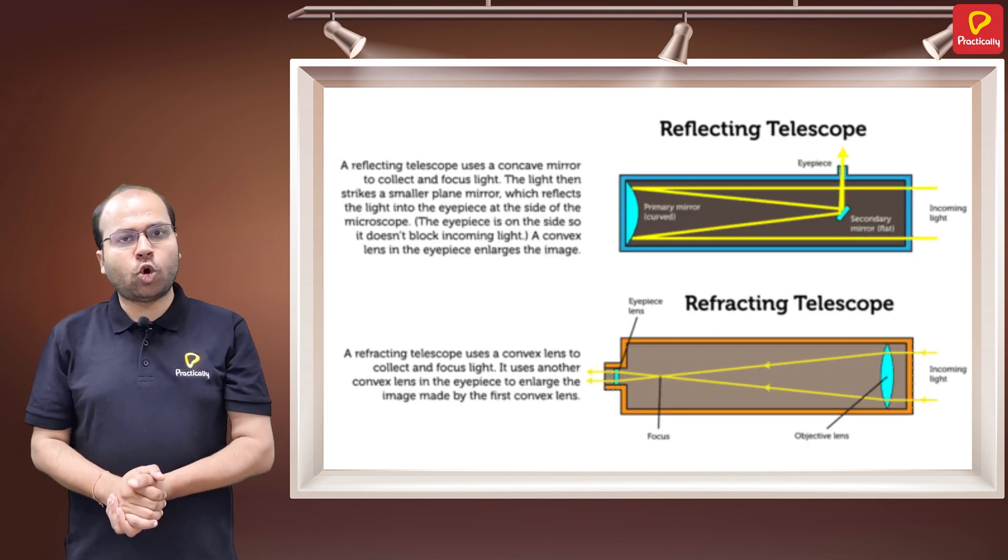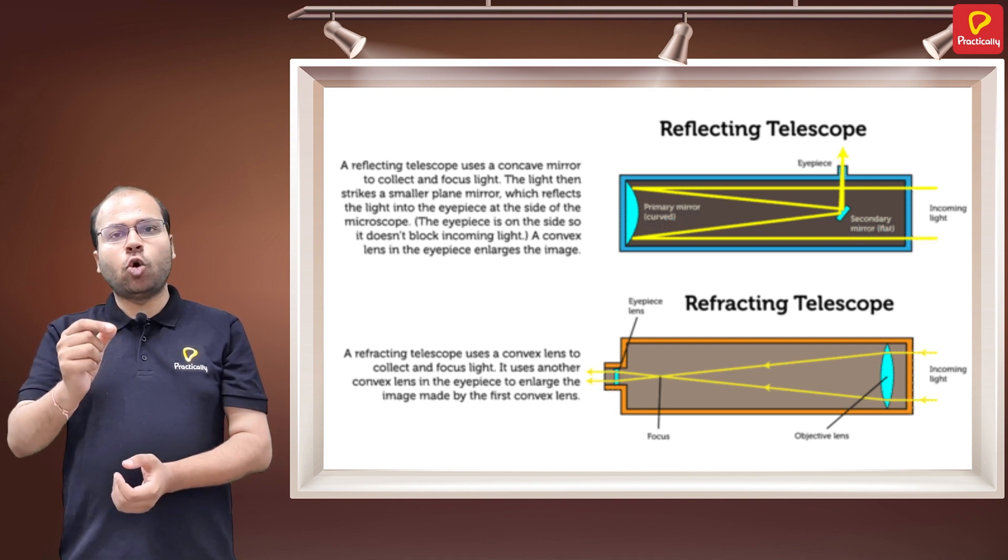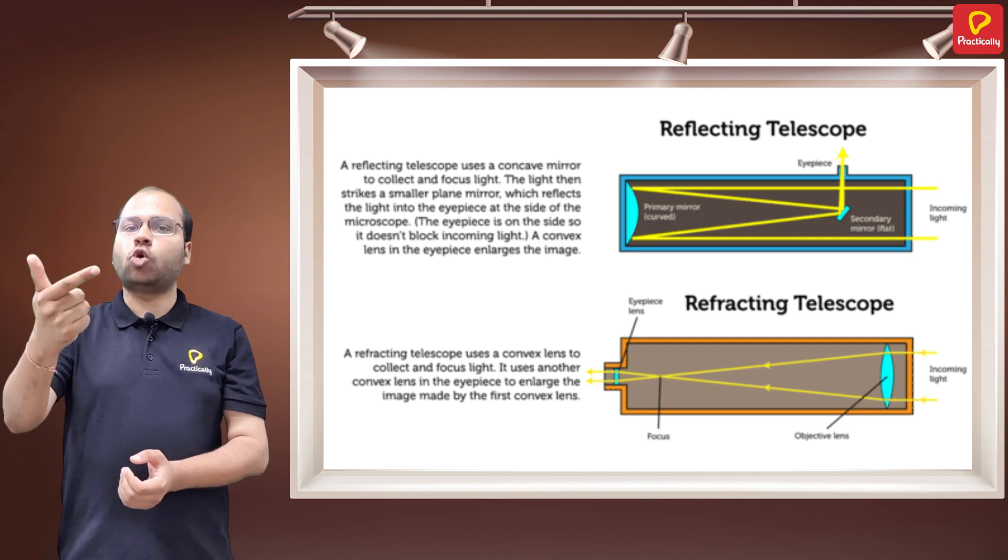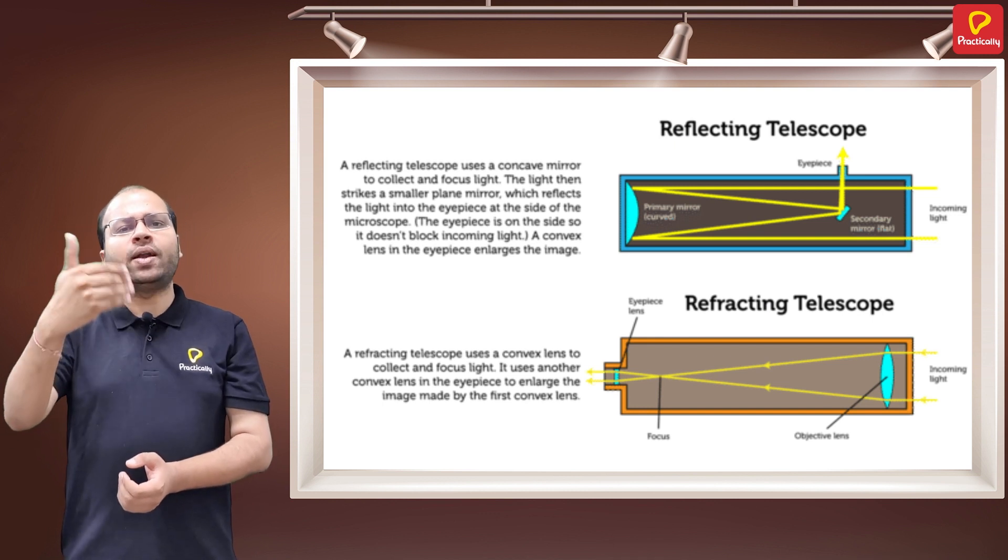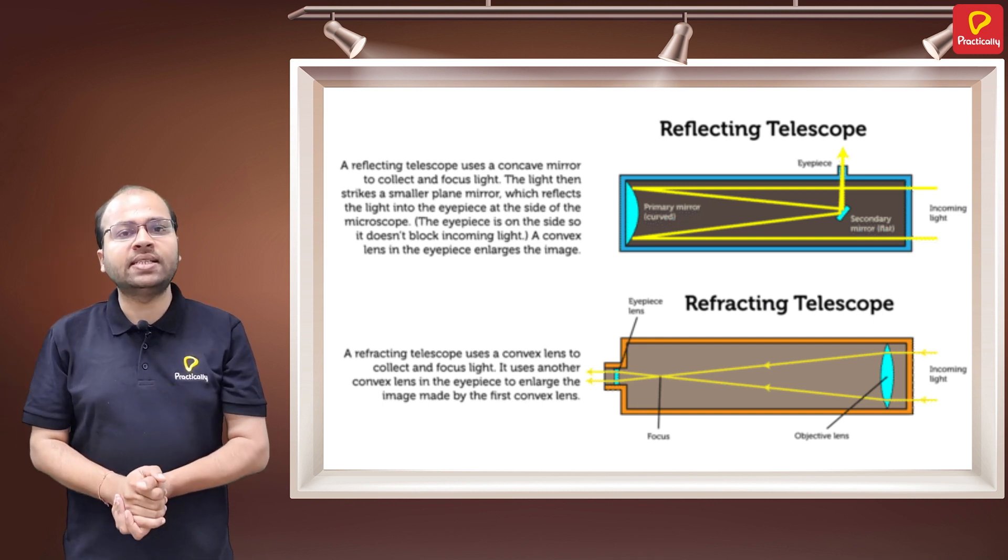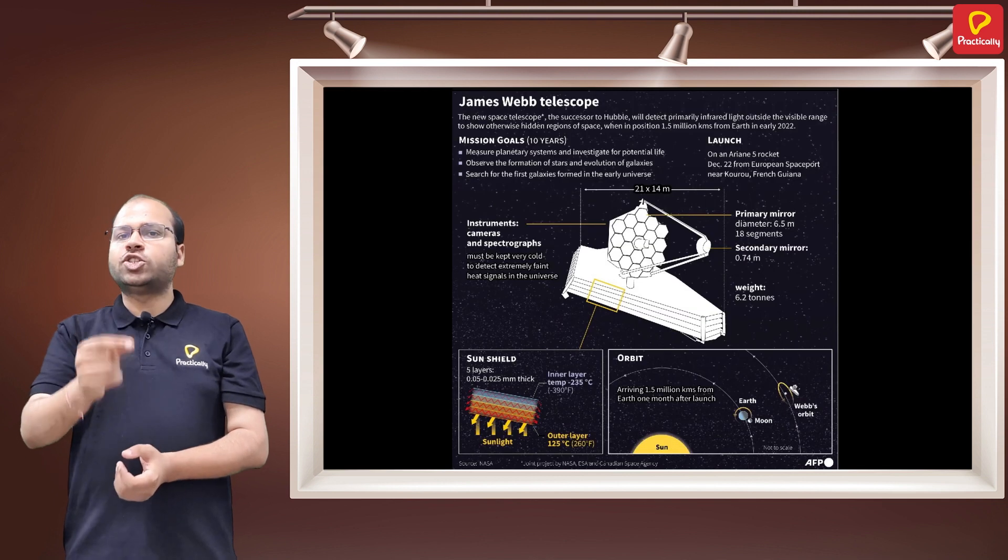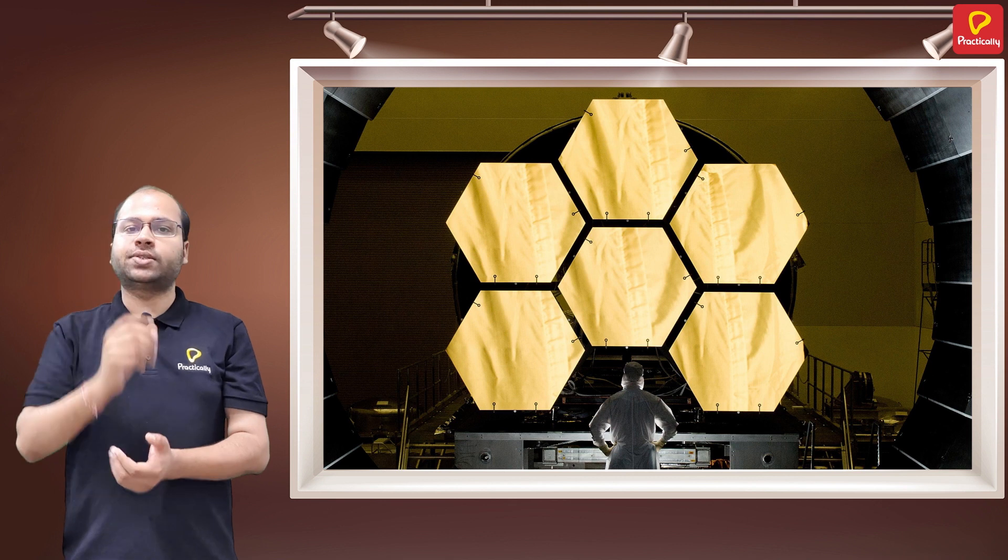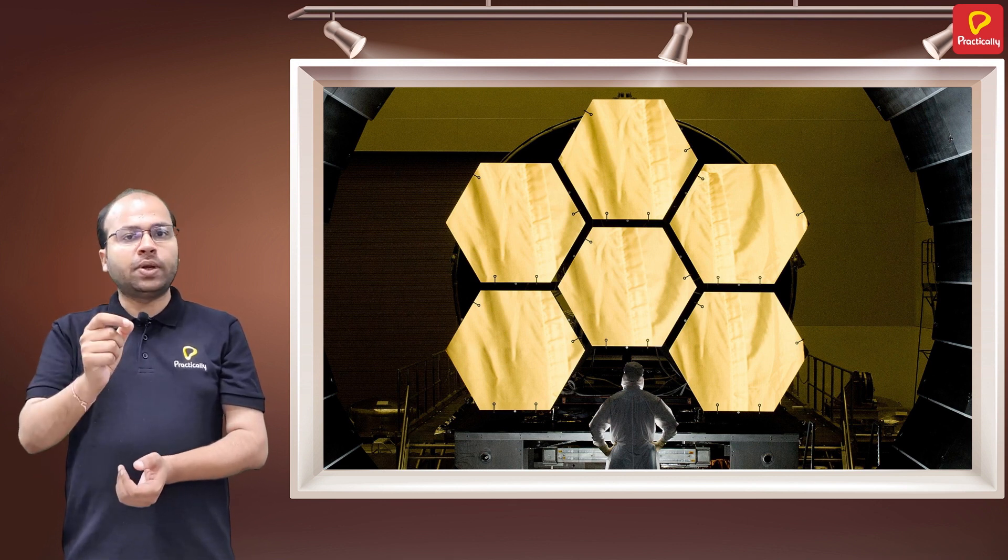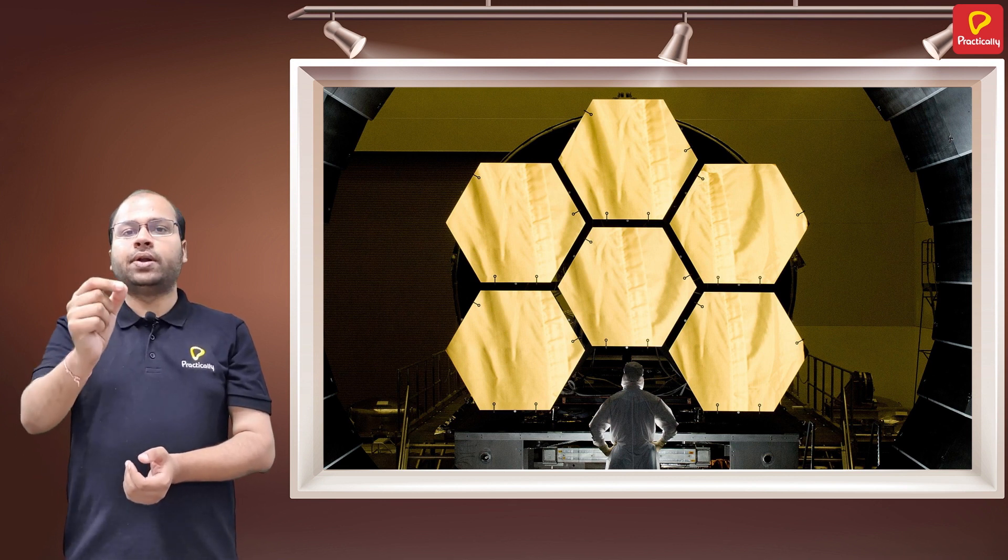So as we have discussed, we have two types of telescopes: a refracting telescope and a reflecting telescope, where the reflecting telescope has major advantages over refracting telescope. Our James Webb Telescope is a reflecting telescope having three mirrors.